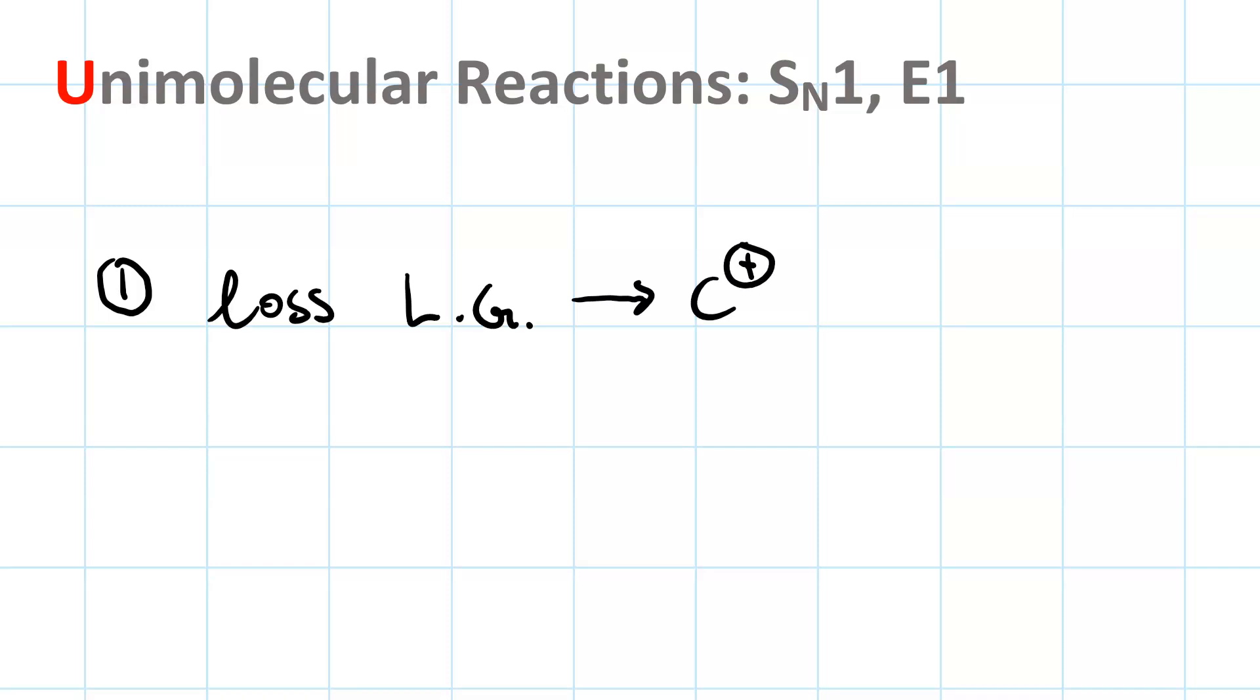This forms a carbocation. Now, if your second step is nucleophilic attack, then you get SN1. On the other hand, if your second step is proton transfer, you get E1.